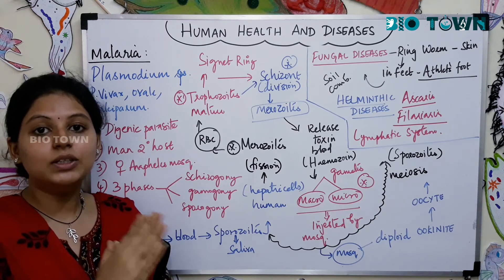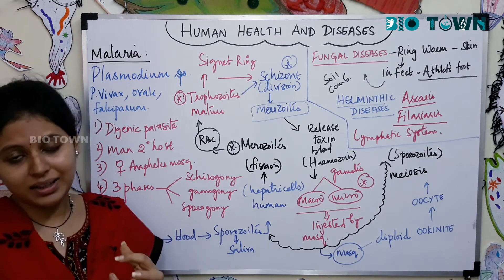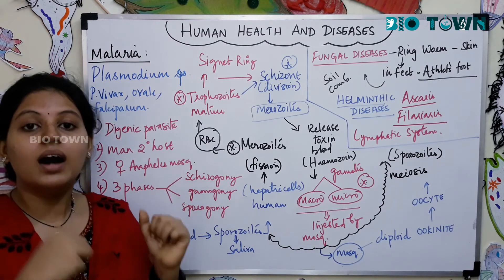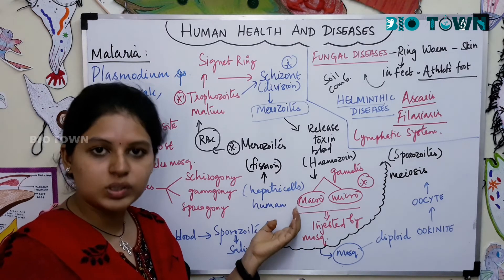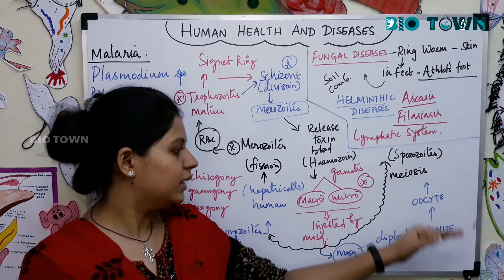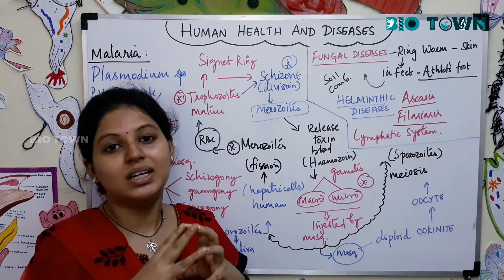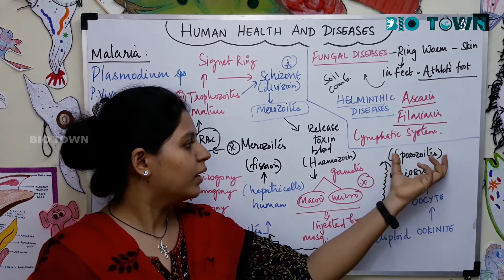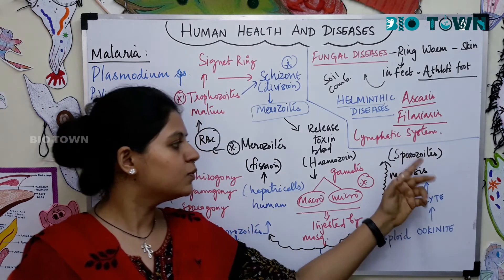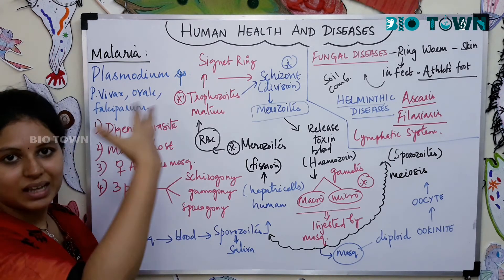The male gamete is called the microgamete and the female gamete is called the macrogamete. These gametes are in the circulatory system, ready to enter the mosquito. When another mosquito feeds and sucks blood, the macrogametes and microgametes enter the mosquito. In the gut of the mosquito, these gametes fuse — the haploid gametes produce diploid ookinetes, which mature to form oocysts. These oocysts undergo meiotic division and form sporozoites, which settle in the salivary glands of the mosquito, ready to enter humans again.